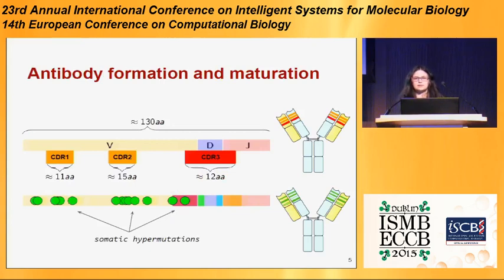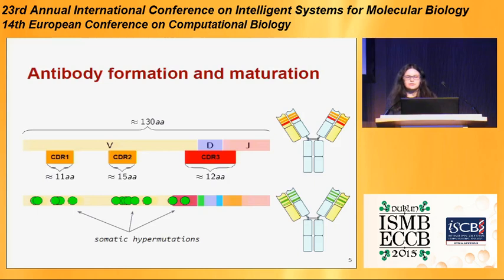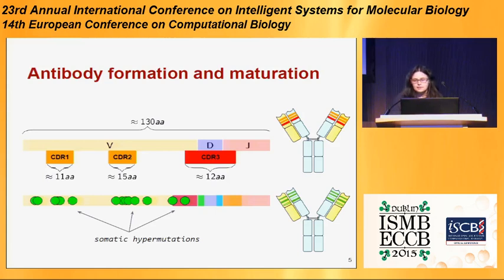A significant part of the antibody is a variable region that includes V, D, and J gene segments that are randomly chosen from the genome. And there are three complementary determining regions: CDR1, CDR2, and CDR3. CDR3 is the most variable part of the antibody, and antibodies bind with antigens using this CDR3.